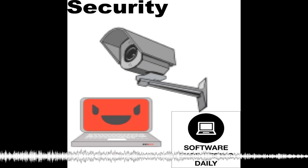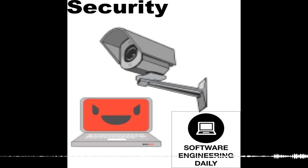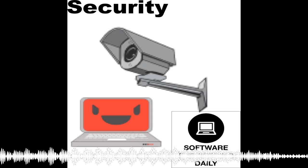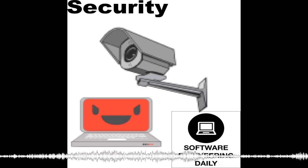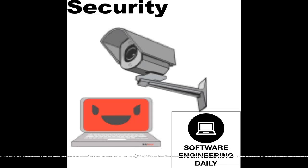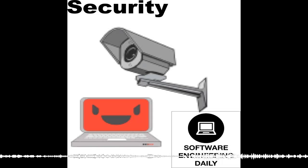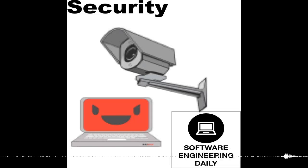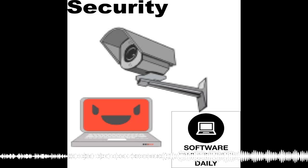Somebody developing a safety-critical device for an aircraft will want very high recall — finding as many bugs as possible — and will accept false positives and slower performance because lives are at stake. Whereas somebody writing a game for a cell phone is more likely to care about the most common bugs and wants to get on to developing new features as quickly as possible.